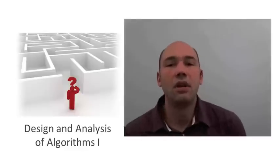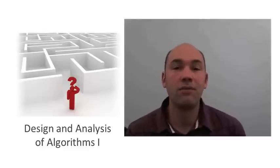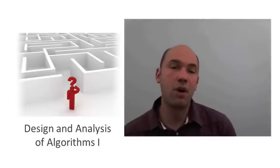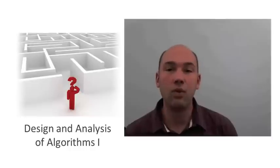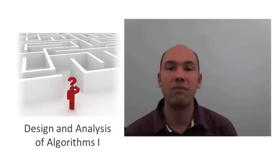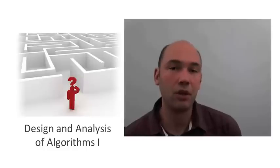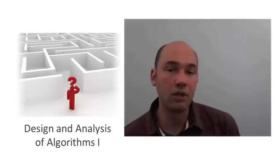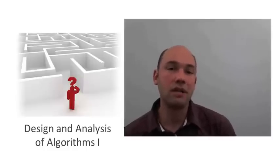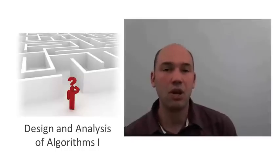In this video and the next, we're going to study a very cool divide and conquer algorithm for the closest pair problem. This is a problem where you're given endpoints in the plane and you want to figure out which pair of points are closest to each other. This will be the first taste we get of an application in computational geometry, which is the part of algorithms that studies how to reason about and manipulate geometric objects.